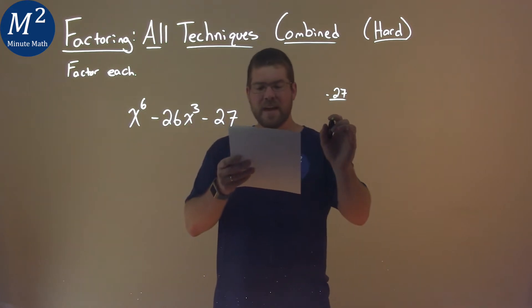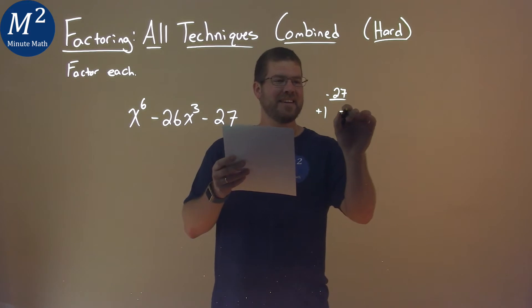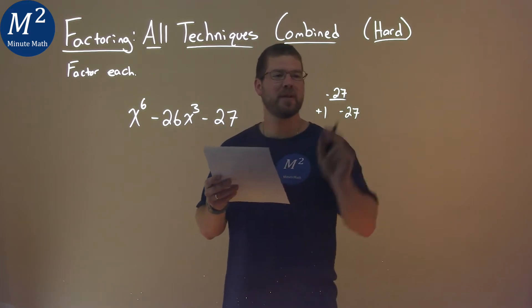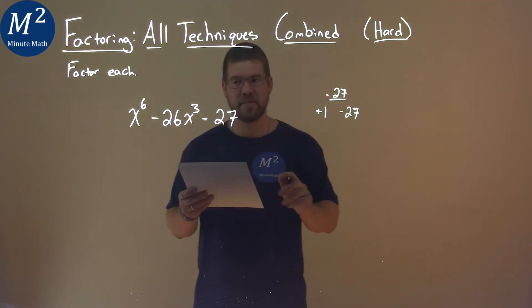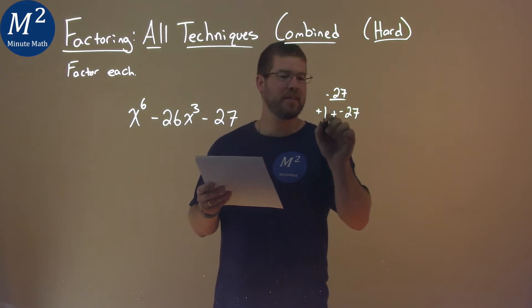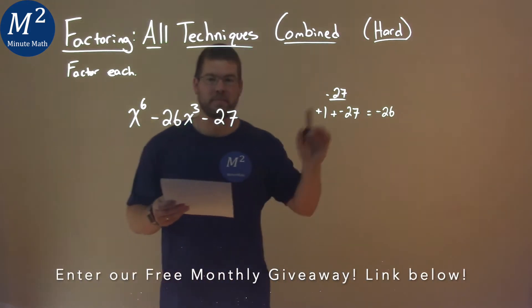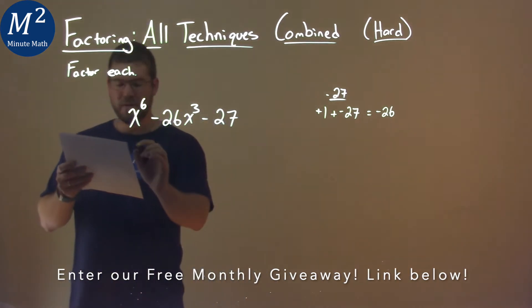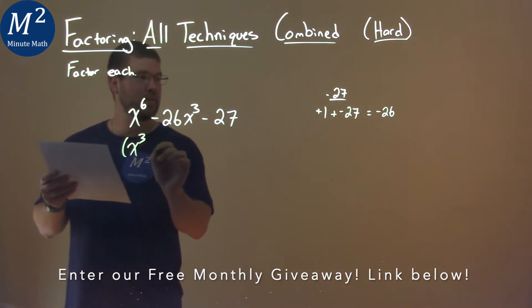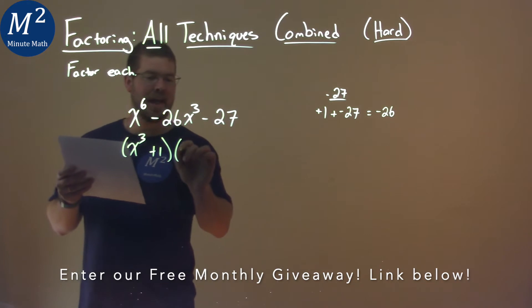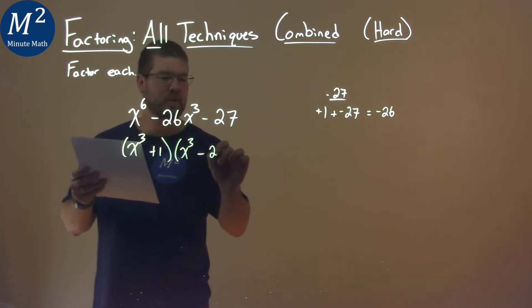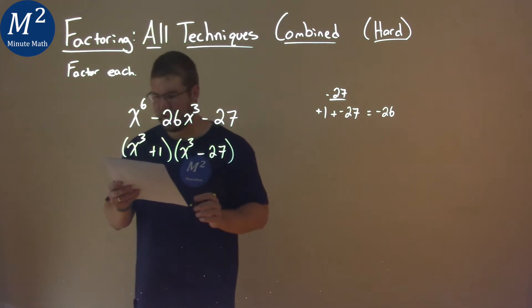Well, if we have a positive 1 and a negative 27, they multiply to be negative 27. But when I add them together, that equals negative 26. So with that information, we have x to the third plus 1 and x to the third minus 27 is how we can break that down.